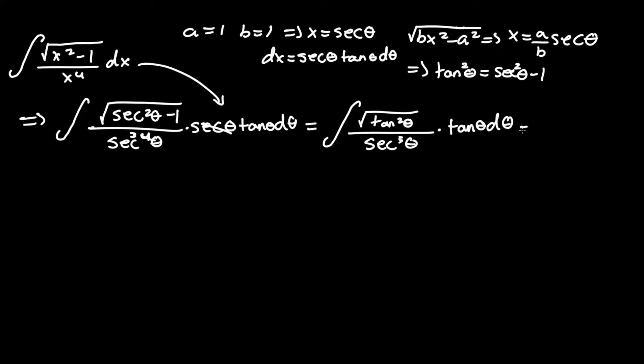We can go one step further. Set that equal to the integral of, we know that the square root of tan squared is just tan. So it would just be tan squared theta over secant cubed theta d theta.